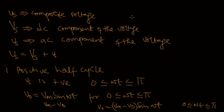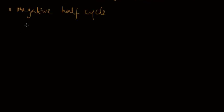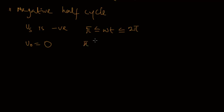During the negative half cycle, Vs is negative from π ≤ ωt ≤ 2π. In this instance, the rectifier acts as an open circuit because the diode is reverse biased. Because diode D1 does not allow any current to flow through, the output voltage Vout equals zero for π ≤ ωt ≤ 2π. That is why the half wave rectifier conducts during the positive half cycle only and does not conduct during the negative half cycle.